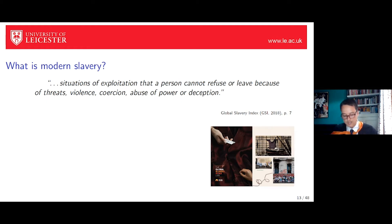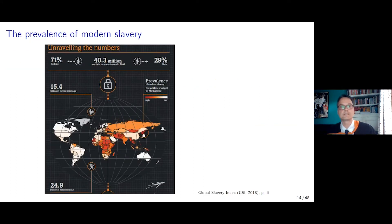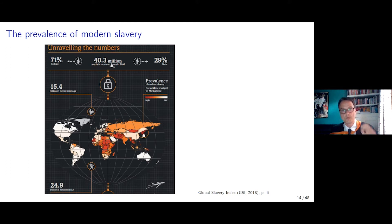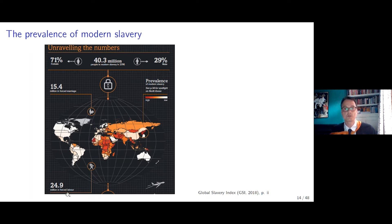The Global Slavery Index — a joint effort by the Walk Free Foundation, the ILO, and the International Organization for Migration — estimates the prevalence of forced labor worldwide. In 2016, around 40 million people were in modern slavery. Focusing on countries that qualify for development assistance, that number becomes 30 million. Roughly 70% are female and 30% male. Splitting by type: 15 million are in forced marriage and 25 million in forced labor.